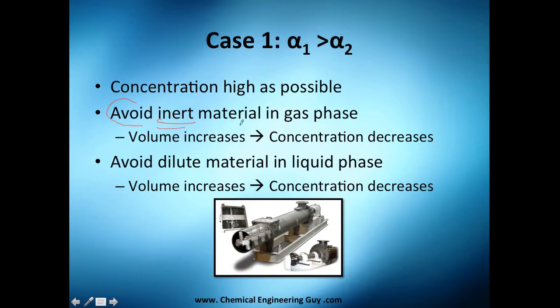Now how do you do that? Well, the first thing you want to avoid is inert material. Why? Because the volume increases. So when you have this and you have nitrogen and your reactant is oxygen, well all this is space. The concentration of oxygen here in the whole system is lower as if you had the whole system with oxygen. You want to avoid that.